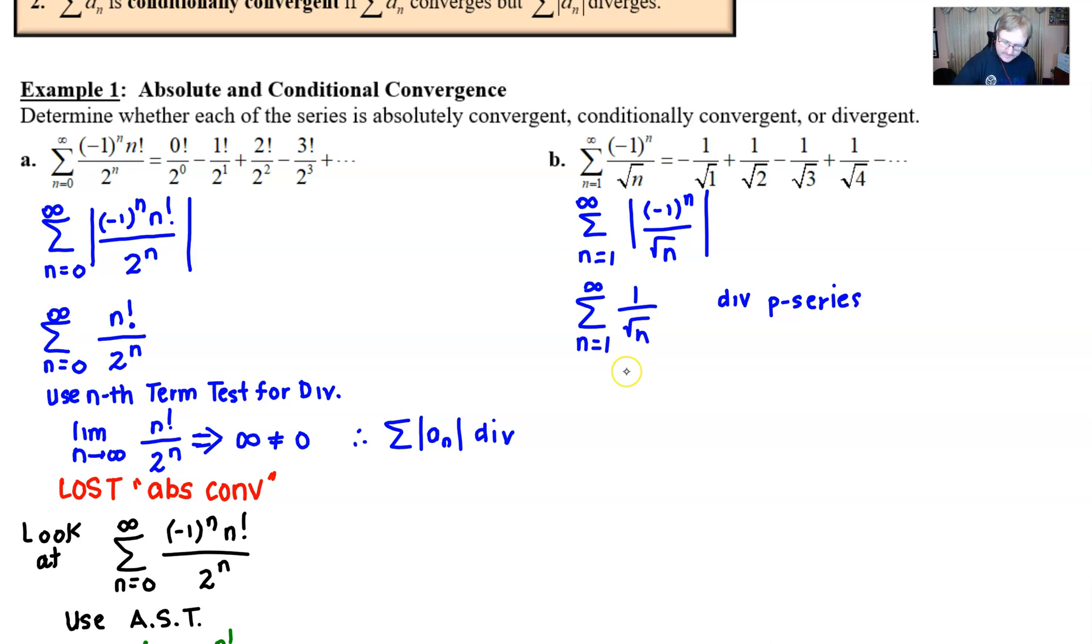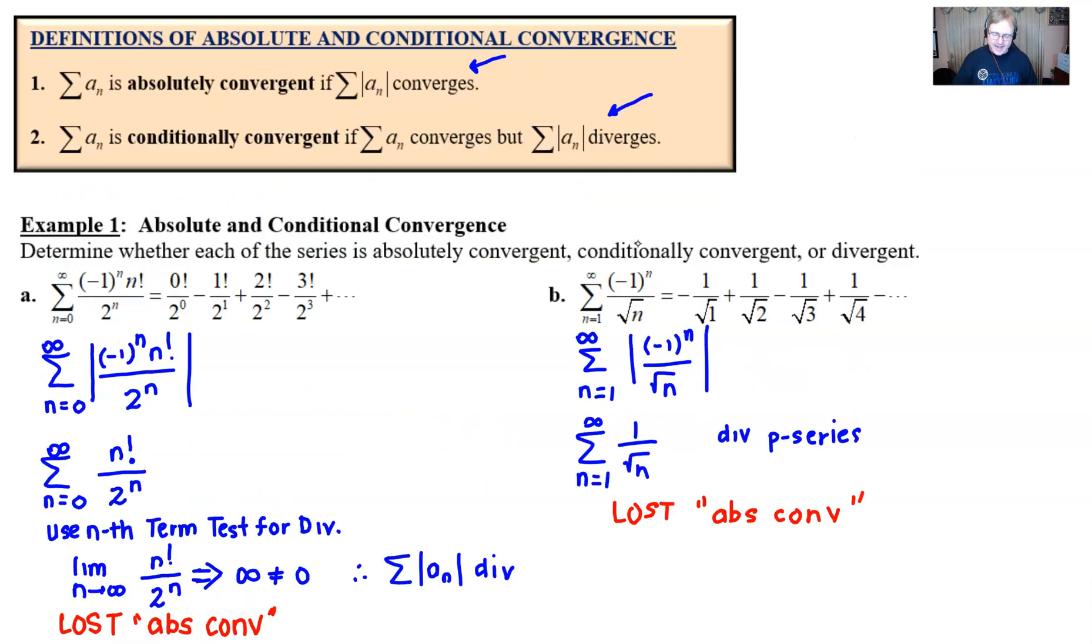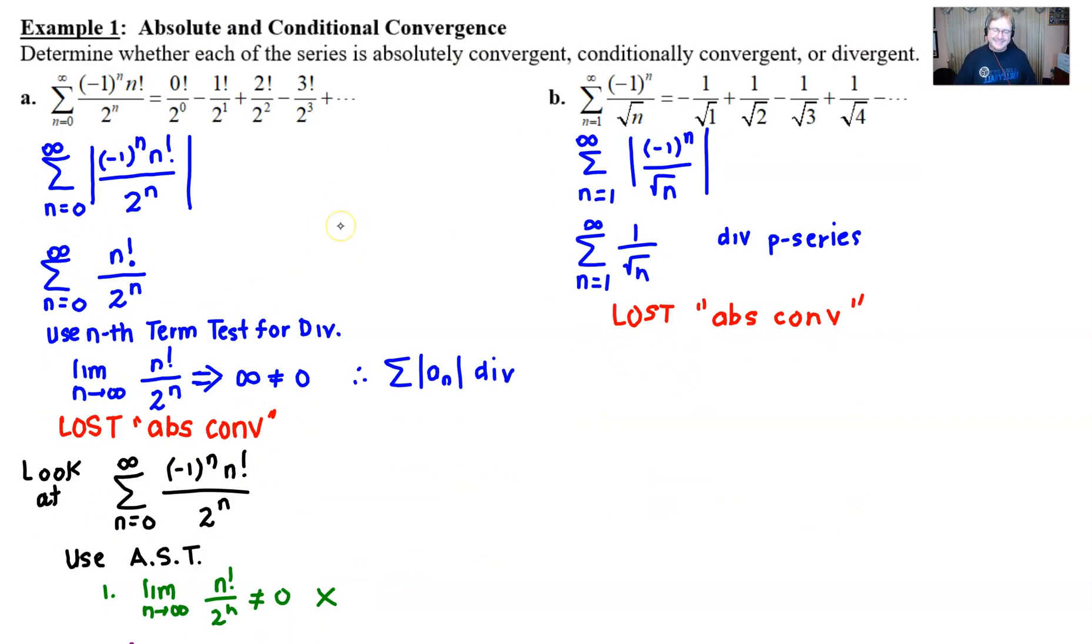So what does that mean? Once again, we've lost any chance at absolute convergence. Boy, I've made these problems tough, didn't I? Because do you realize that if the absolute value of this series would have converged, then the problem's over. You would just write absolute convergence, because that's what line one says. It's line two that's going to be the tricky line. So what do we have to do?